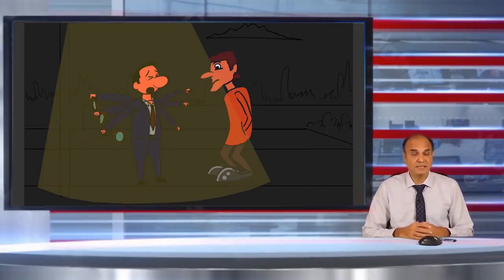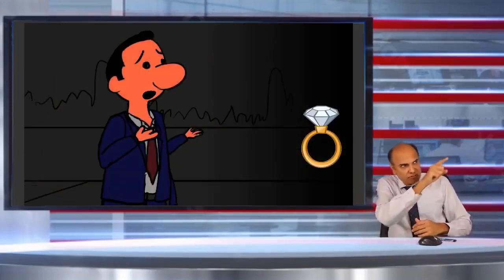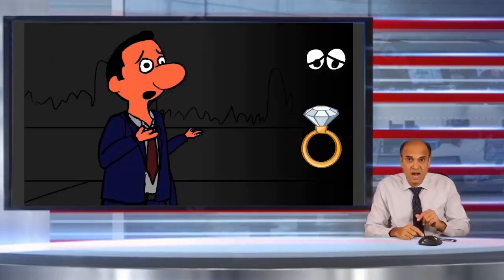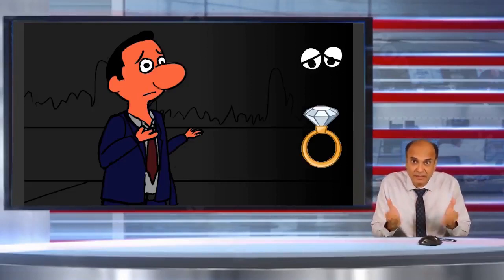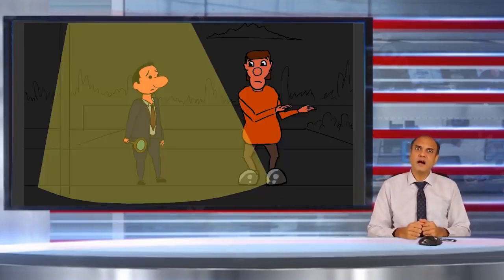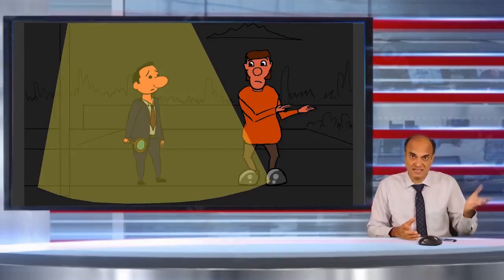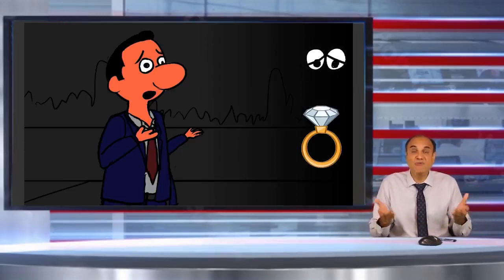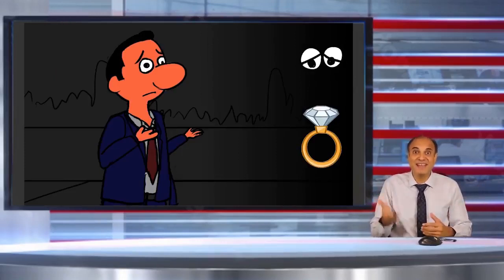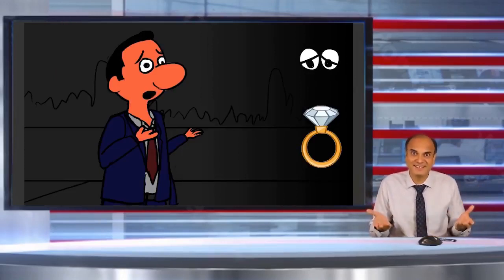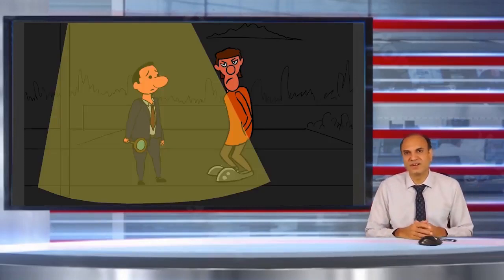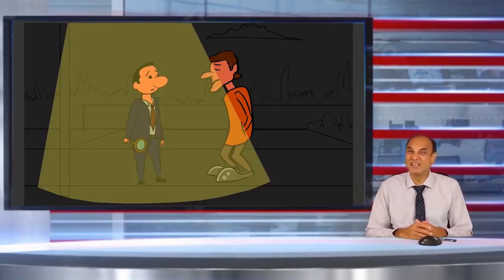And this gentleman tells that somewhere out there in the dark corner he lost his diamond ring. So the friend asks why he isn't searching there where he lost it. The gentleman says how can he search there — there is no light, he can't search in the darkness. And of course his friend tells him that he will never be able to find that diamond ring.